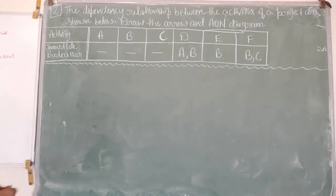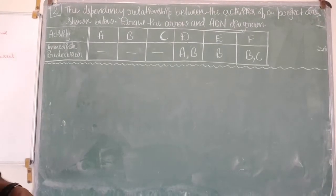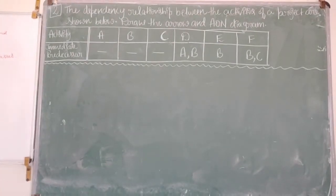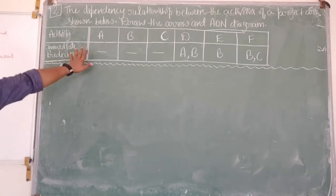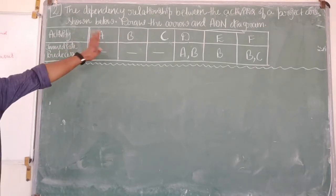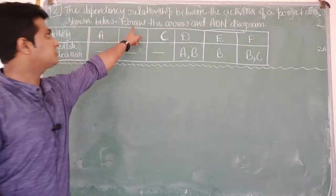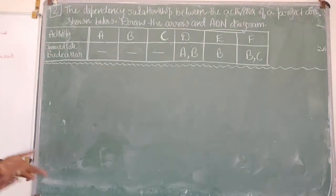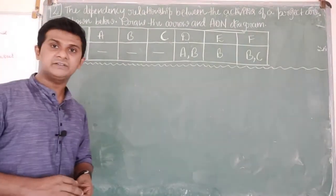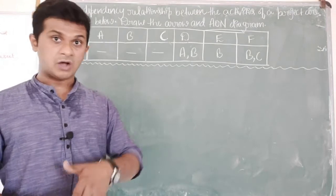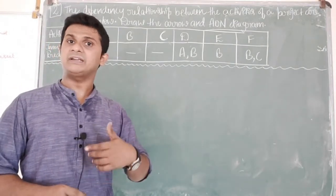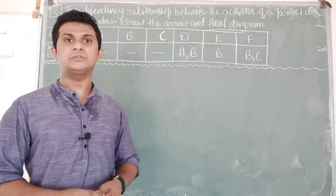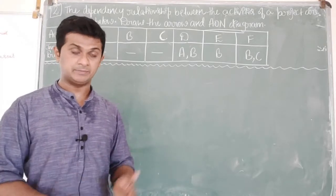In the question they have given, the dependency relationship between the activities of a project are shown below. They have provided different activities and asked us to draw the arrow diagram and AON diagram, which is the activity on node diagram. How to draw the AON diagram I'll be discussing in the next video. In this video, the focus will be on the arrow diagram.